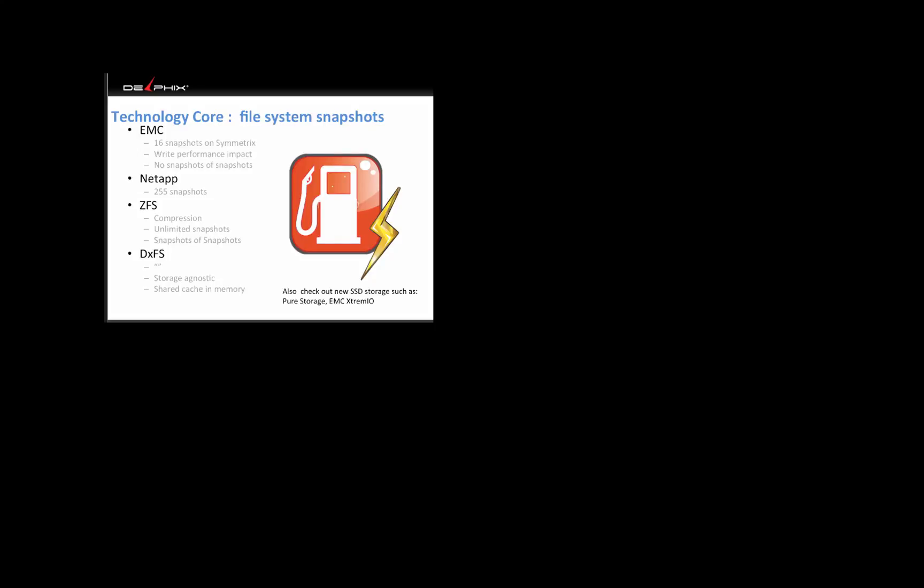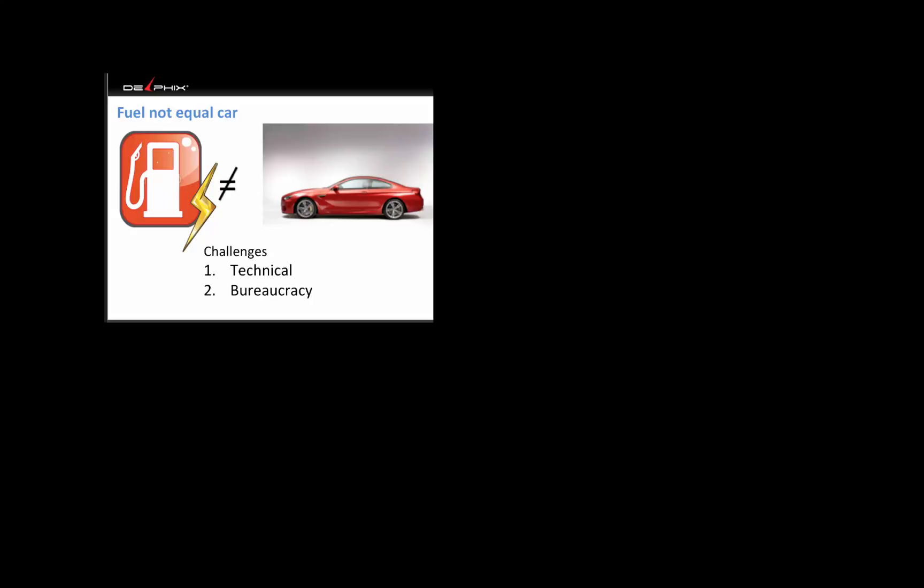There are technologies called file system snapshotting — it's been around 20 years. It was 30 years after the Wright brothers flew before commercial airlines started; it took 30 years before people really profited from flight. Similarly, snapshotting's been out 20 years but people haven't really profited. EMC's Symmetrix supports 16 snapshots, NetApp gives 255, ZFS is unlimited and open source. DXSF is the file system we use — originally ZFS, modified for data copying purposes. New flash storage also comes with snapshotting. But the snapshot itself is just the fuel — we want the DevOps of cloning.